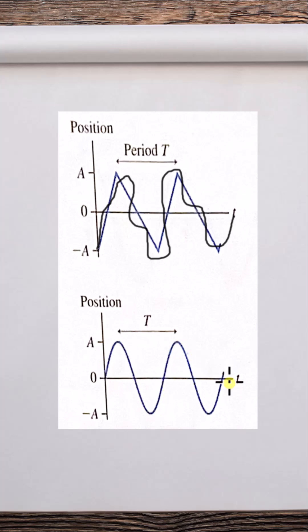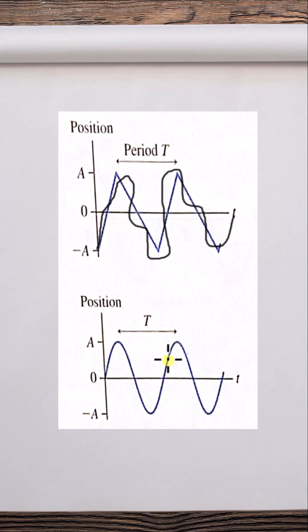And this is so important because any other type of oscillation, like this ramp or this one I drew here, can be represented as a sum of sinusoids. No matter what it is, you can use an infinite series of sinusoids to represent any oscillation.